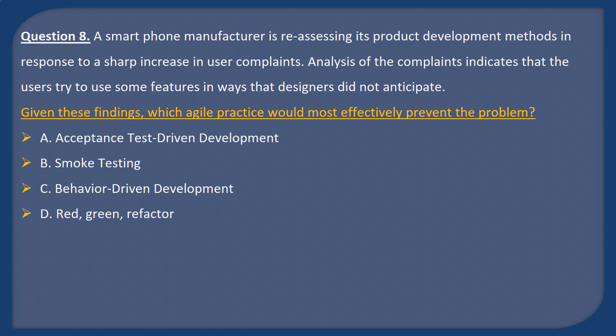Question 8. A smartphone manufacturer is reassessing its product development methods in response to a sharp increase in user complaints. Analysis of the complaints indicates that users tried to use some features in ways that designers did not anticipate. Which Agile practice would most effectively prevent the problem? A: Acceptance test-driven development. B: Smoke testing. C: Behavior-driven development. D: Red-green refactor.